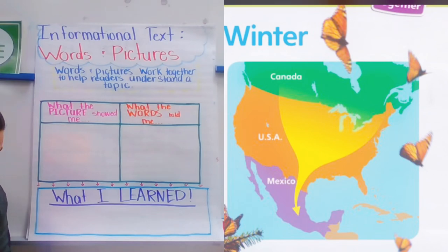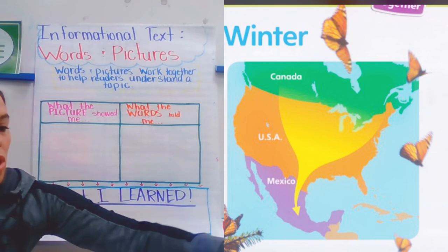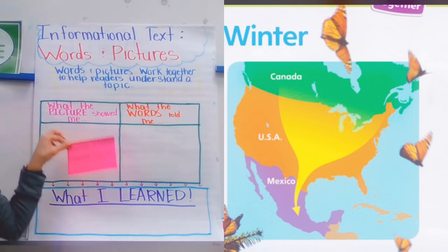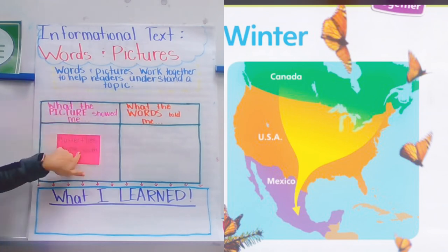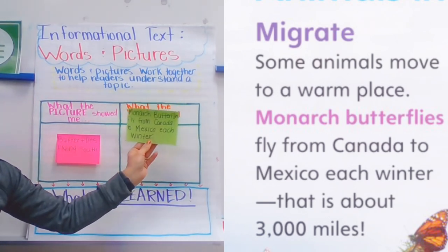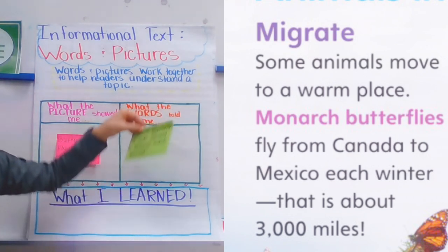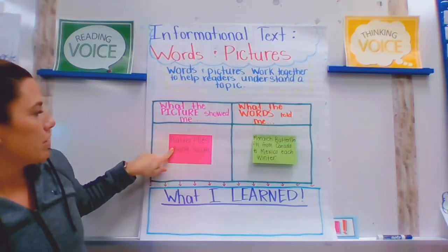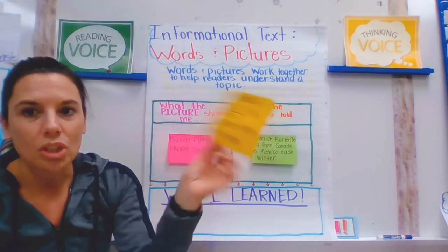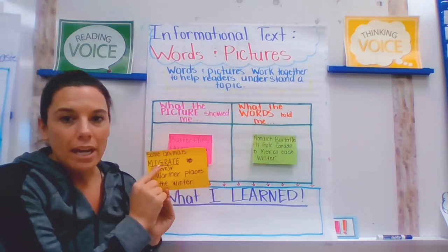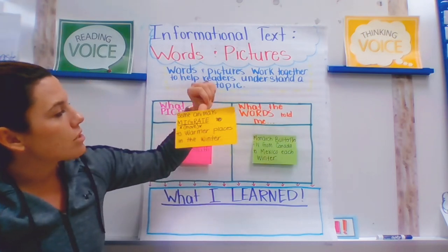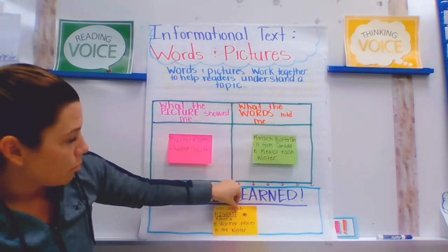Let's talk about the picture. In that picture, there's a map with butterflies and a yellow arrow showing they're flying south. So the picture is showing me butterflies flying south. The words told me that monarch butterflies fly all the way from Canada down to Mexico each winter. Using the picture and the words together, I learned that some animals migrate — and that word migrate means to move. Some animals migrate or move to warmer places in the winter.